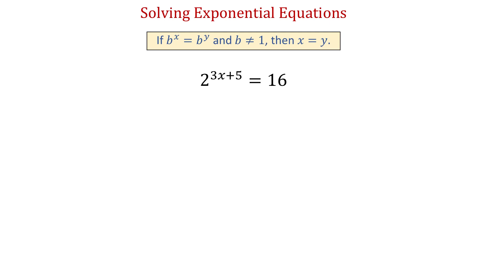To solve all four equations in this video, we will use the following property: if b to the power of x equals b to the power of y, and b is not equal to 1, then x equals y. So if in an equation we can write both sides as a power of the same base, then we can set the exponents equal to each other and solve for the variable. In other words, if the base is the same on both sides, then the exponents will be equal. Now let's try this property on the equation below.